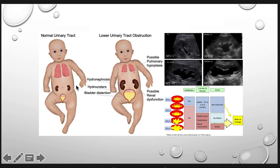This is a normal urinary tract. Patients with hydronephrosis, hydroureters, or bladder distension tend to have a dilated collecting system or dilated bladder during prenatal ultrasound, as shown here. There are different grading systems according to severity — once the dilatation gets bigger, the grading increases.